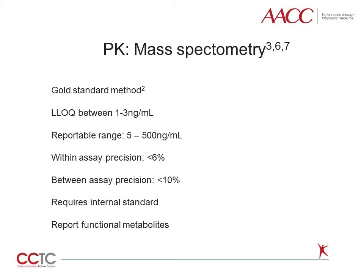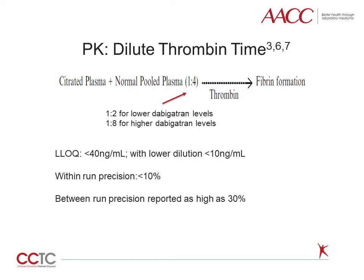Accuracy and precision within a single testing location is quite good. The dilute thrombin time can be used to quantitate Dabigatran if the assay is calibrated using a Dabigatran calibrator. Results compare well to a mass spectrometry method. Currently, there are no Dabigatran calibrators that are FDA cleared for IVD use — all are for research use only.